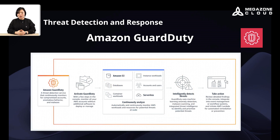Amazon GuardDuty is a threat detection service that continuously monitors your AWS accounts and workloads for malicious activity and unauthorized behavior. It uses machine learning to analyze event logs and network traffic data from various AWS sources such as VPC flow logs and CloudTrail logs. It generates alerts with severity levels and recommended remediation steps, which you can view in the AWS Management Console. Additionally, it integrates with other AWS services like Amazon SNS for alerts and AWS Lambda for taking further actions.